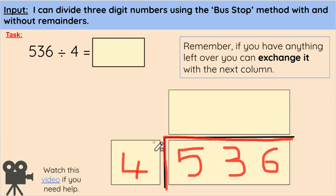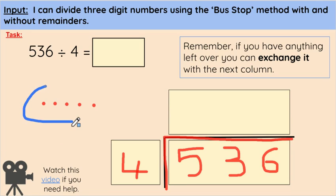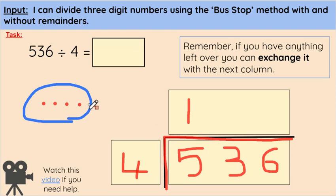Then we need to figure out how many times does 4 go into 5. Now, we've got one group of 4, but there's going to be some left over as well. It's like a remainder, but in this method we need to shift the remainder over and exchange it into the next column. So we know there's one group of 4 in 5, so we write 1 at the top. Then our 1 left over, we're going to exchange it into the next column, so we just put it here to help us remember.